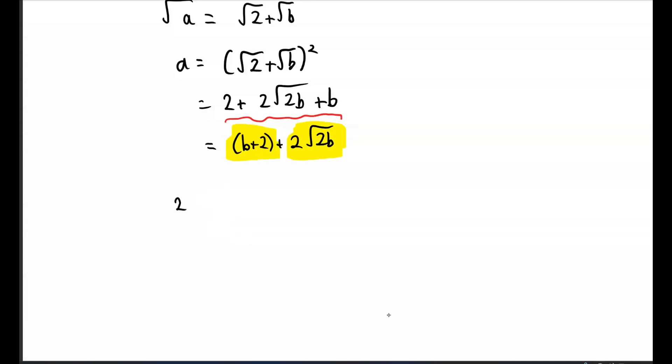If we set 2√(2b) = k where k is an integer, we get √(2b) = k/2. Squaring both sides gives 2b = k²/4, and b = k²/8.